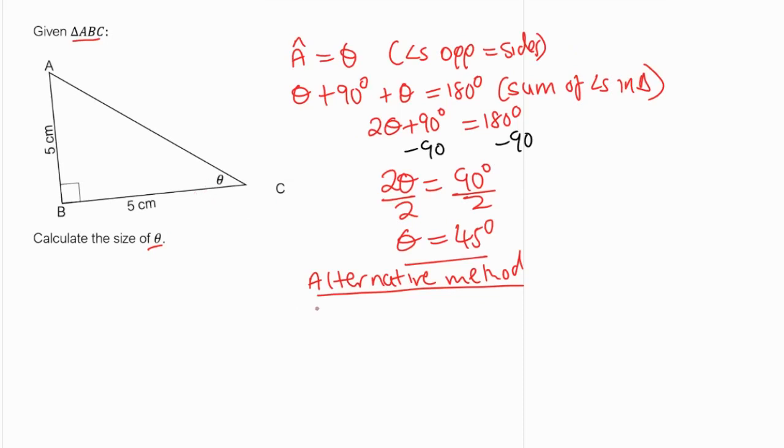If you're finding one of the angles opposite equal sides, you can easily just say theta is equal to 180 degrees minus the given angle. The given angle here is 90 degrees, so minus 90 degrees divided by 2. You can just do that once and then you write sum of angles in triangle, and then theta is equal to 45 degrees.